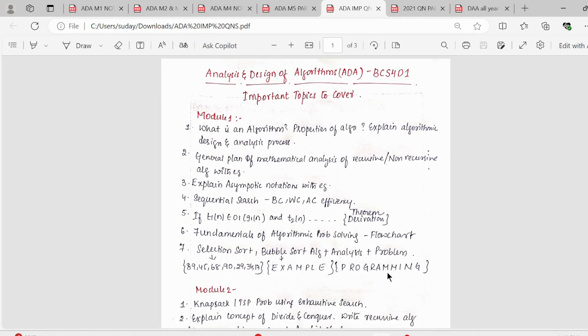In this video we will be looking into the important questions of Analysis and Design of Algorithm subject, subject code BCS401. This is for the 22 scheme students for the fourth semester.